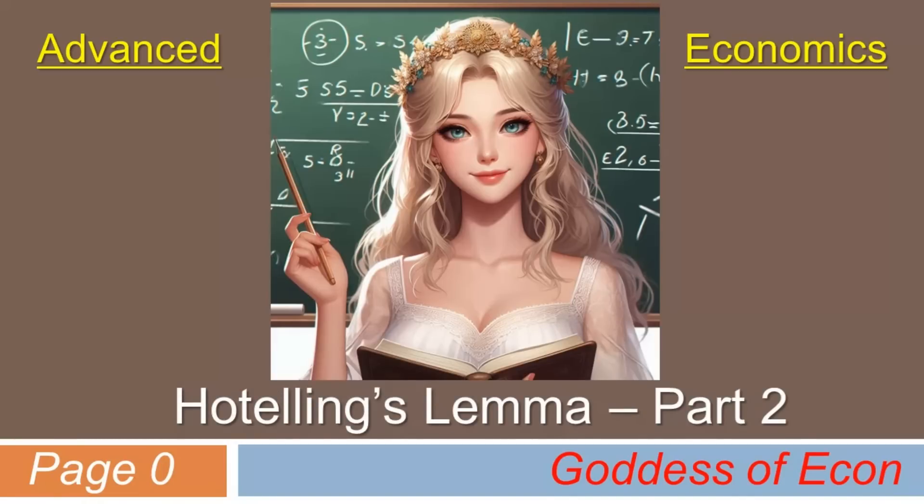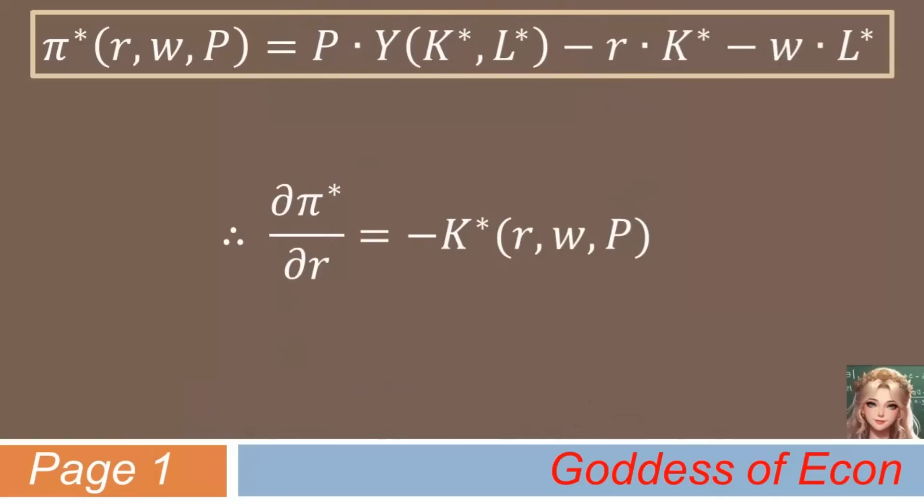Okay then. All you students out there, please follow me. In the last lecture video, you have seen that if you differentiate the profit function, or the maximum value function, with respect to r, you get a factor demand function for k multiplied by negative 1. Quite a neat result, wasn't it?